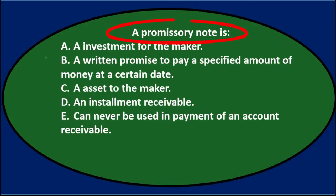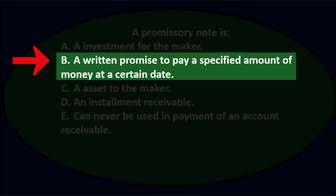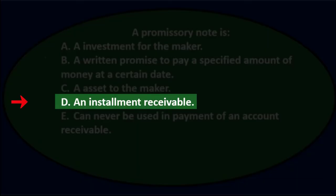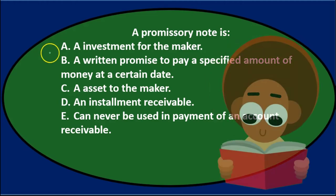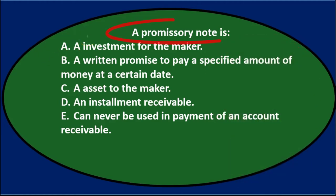Next question: a promissory note is — A) an investment for the maker, B) a written promise to pay a specified amount of money at a certain date, C) an asset to the maker, D) an installment receivable, or E) can never be used in payment of an accounts receivable. We'll go through the process of elimination.